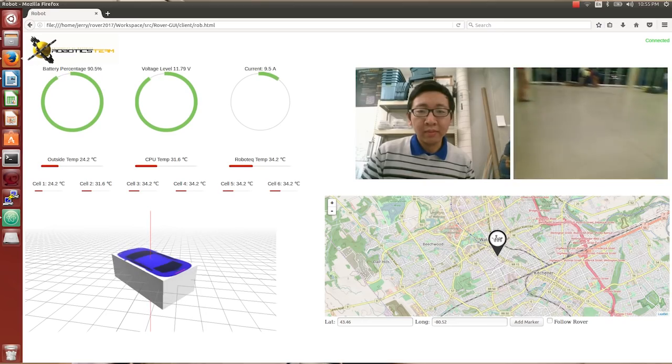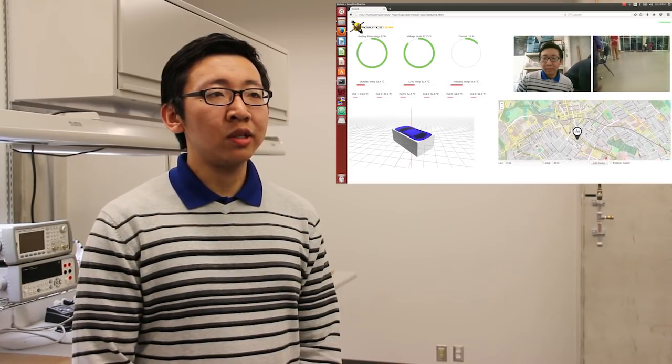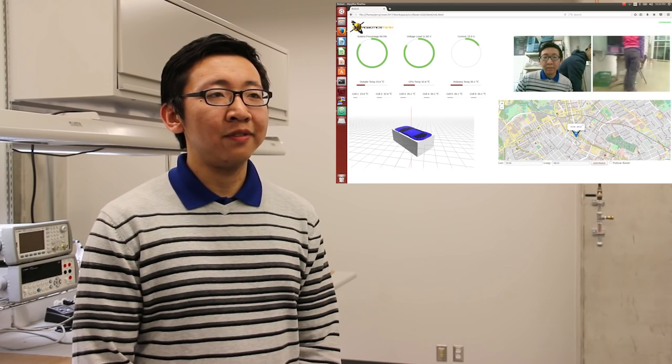Our GUI for the Mars rover this year is made using the React library with ROSlib.js to fully integrate with a ROS backend. In addition to monitoring critical systems of the rover, video streams and live position are also available to the operator for extensive system visibility.